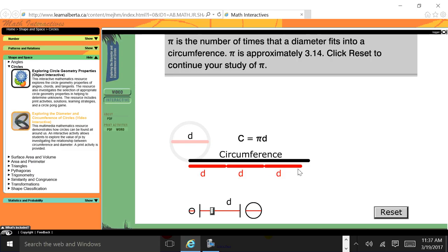Three. Pi is the number of times that a diameter fits into a circumference. Pi is approximately 3.14. So as you can tell, it takes three diameters and a smidge more like 0.14 to wrap around the circumference or the edge of a circle, the perimeter of the circle, the distance around a circle.